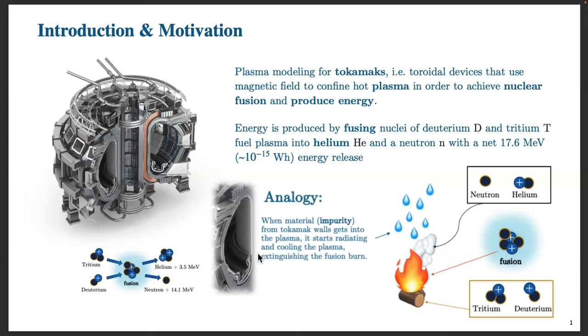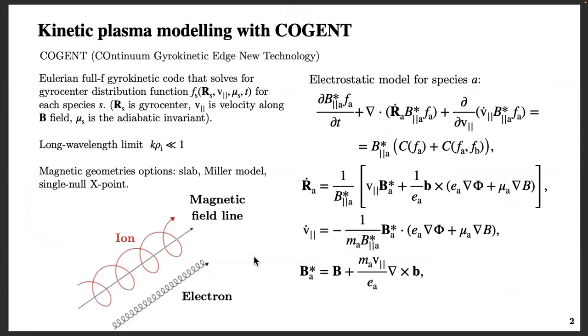Therefore, codes that aim to model and simulate tokamaks need to retain physics that describes impurity transport. One of the leading codes in plasma modeling is developed at LLNL. It's called COGENT. It's a kinetic code, so it calculates the probability for each plasma species particle to have certain velocity at a certain position in the device. It's a very detailed description and consequently it's very expensive to simulate numerically, therefore a lot of work goes into making it more tractable. With new computers, it's becoming more and more an actual simulation tool for tokamaks.